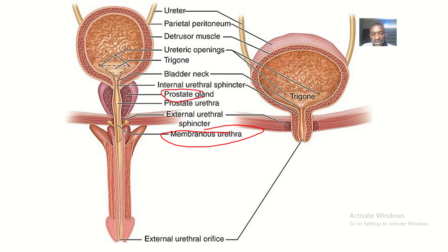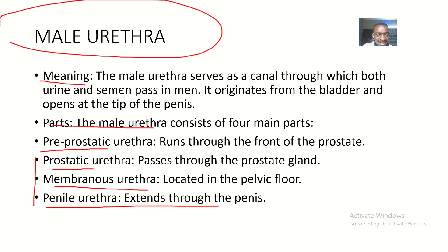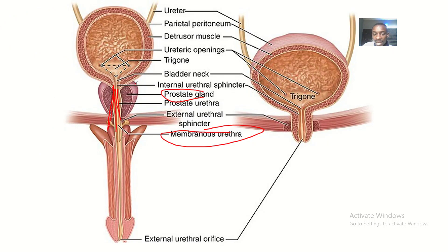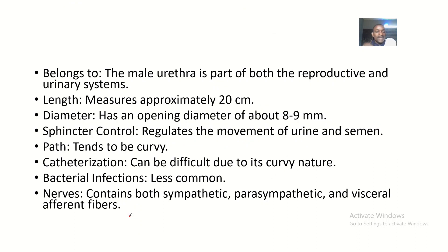You can see the membranous urethra here, and the prostate gland surrounding this part of the urethra — that's what we call the prostatic part. You can mention three parts or four parts; it is essentially the same thing. This part of the urethra inside the penis is what we call the penile urethra.